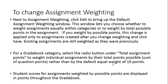To change assignment weighting, next to Assignment Weighting, click Edit to bring up the default Assignment Weighting window. This lets you choose whether to weight assignments equally within categories or to weight by total possible points in the assignment. If you weight by points, please remember this change is applied only to assignments created after you change weighting and click Save. Existing assignments are still weighted as they were previously.